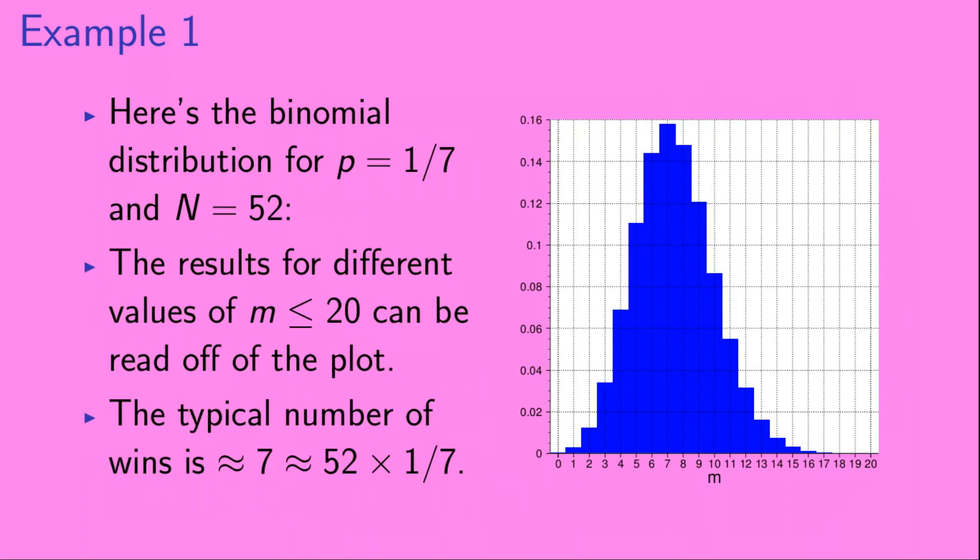Here's the binomial distribution for p equals 1 seventh, the probability of a single ticket winning the small prize, and n equals 52, the number of weeks in a year. The results for different values of m, up to m equals 20, are plotted here on the right. The typical number of wins is about 7, which is approximately 52 times 1 seventh, and we can see that the probability to win 7 times is just shy of 16%.